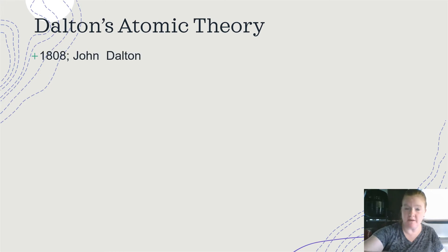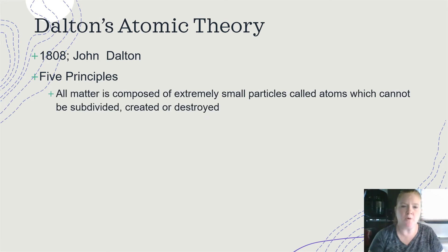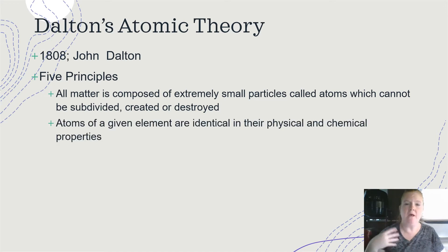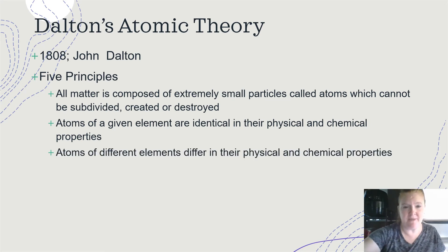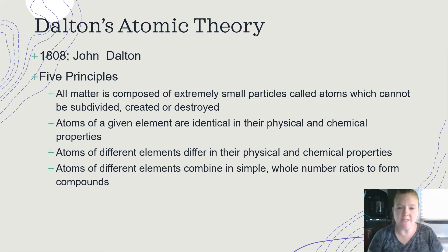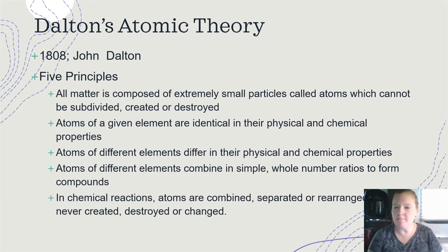Okay, so Dalton's atomic theory. So 1808, John Dalton came up with an atomic theory, five principles. One, all matter is composed of extremely small particles called atoms, which cannot be subdivided, created or destroyed. Now, later we found that part to be not true, but let's just go with it. Atoms of a given element are identical in their physical and chemical properties. Again, this one, we found some glitches here. Atoms of different elements differ in their physical and chemical properties. Atoms of different elements combine in simple whole number ratios to form compounds. In chemical reactions, atoms are combined, separated or rearranged, but are never created, destroyed or changed. Okay, so there were some issues discovered later, but this is a great foundation coming from Dalton.